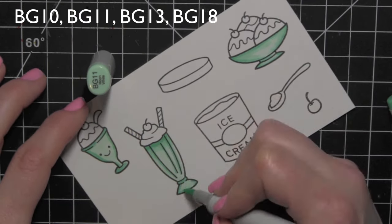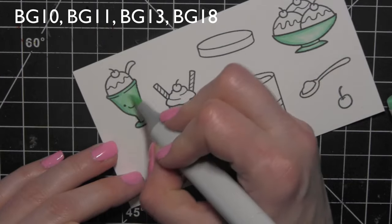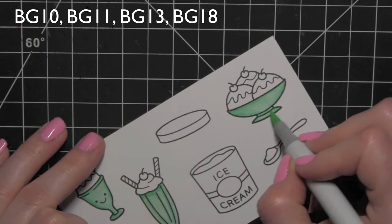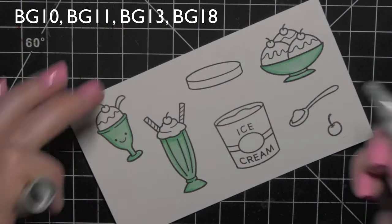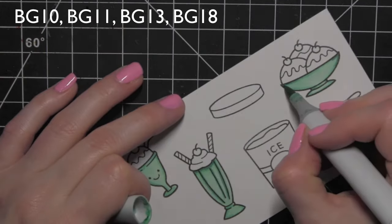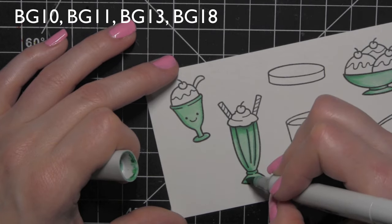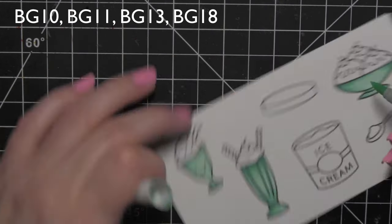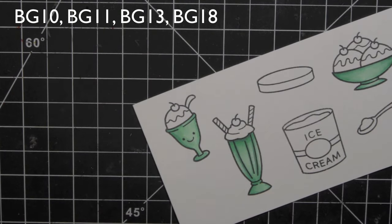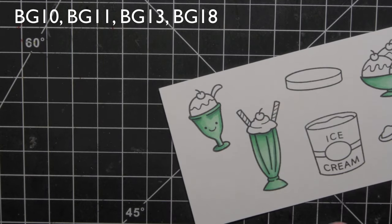I decided to color in the dishes that are holding the ice cream in shades of aqua using BG10, 11, 13 and a little bit of BG18 just to darken up some little areas. I'm using that pretty sparingly and then blending that all out. I wanted the ice cream shop window to be bright and fun so I chose to do all the dishes in the same color.